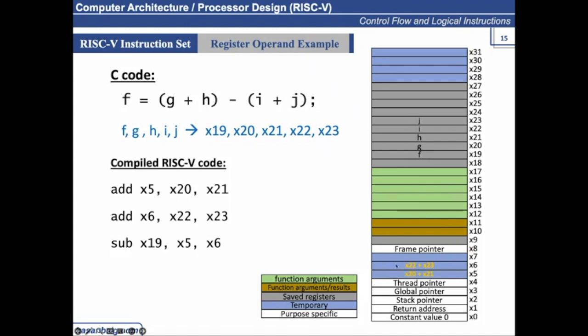And the reason why it is called temporary, because if any instruction is supposed to be executed with the temporary values, these values can be overwritten. That's why they are called temporary registers.